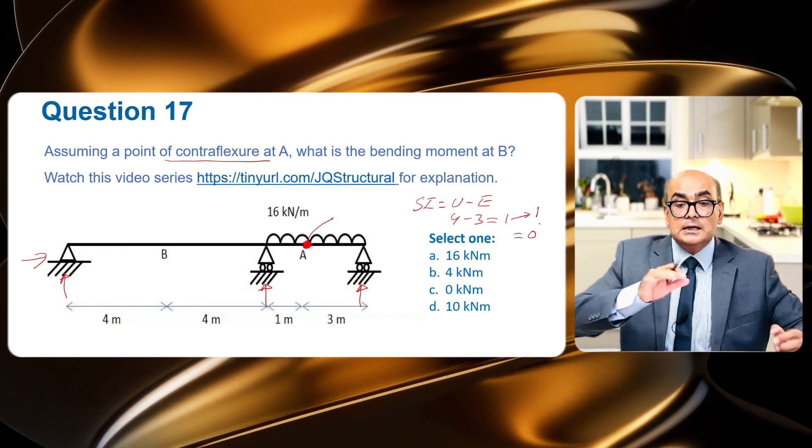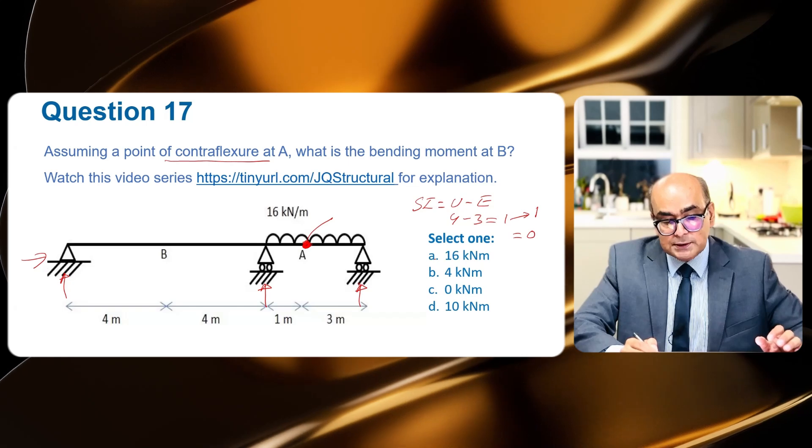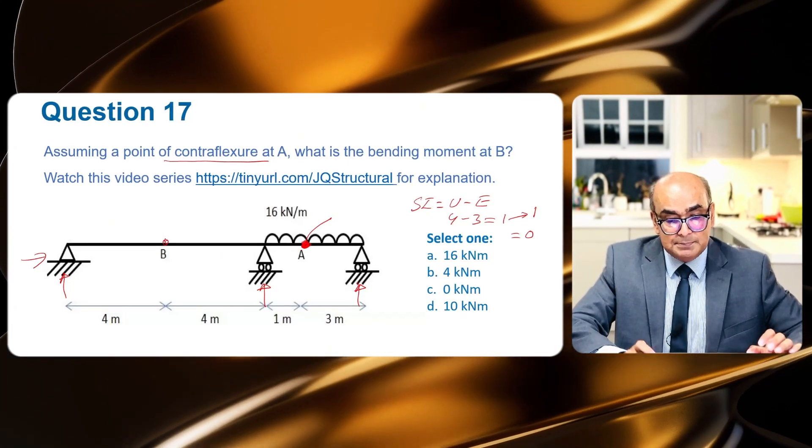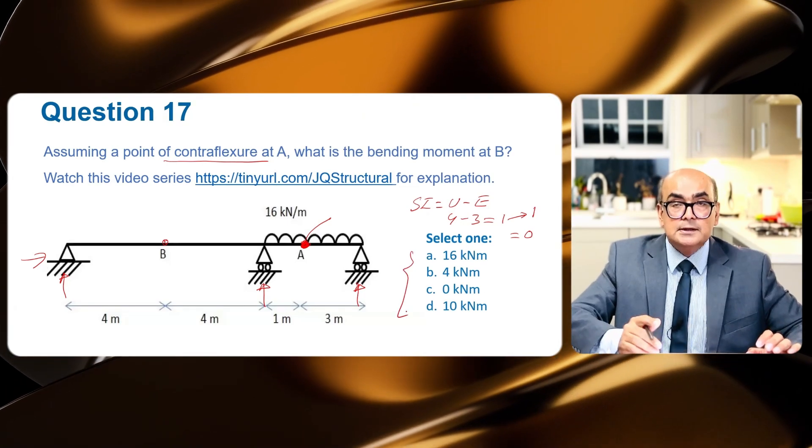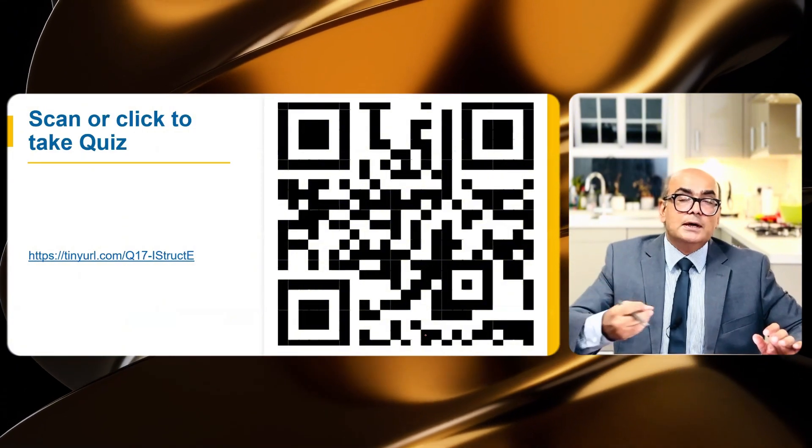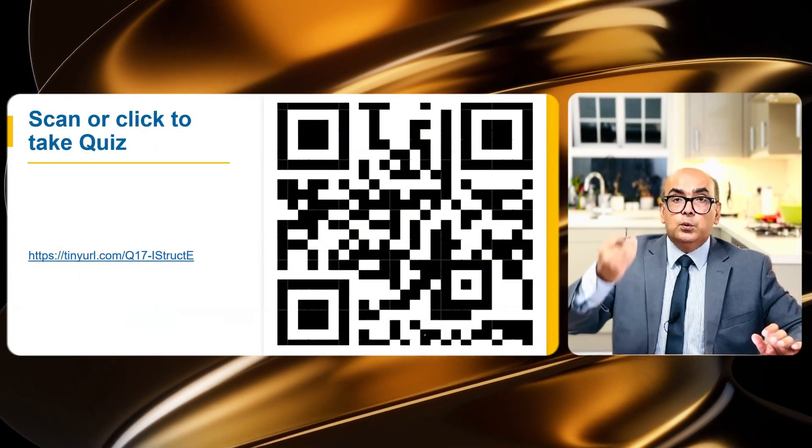Now we can analyze this structure using equilibrium equations. Now what is moment at B? Let us find out what is moment at B. There are four options here, but we will explore all the options.